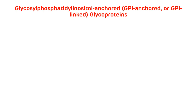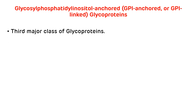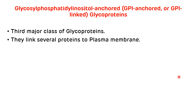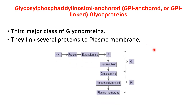Glycosyl phosphatidylinositol anchored glycoproteins, called GPI-anchored glycoproteins, are the third major class of glycoproteins. They are involved in the attachment of several proteins to the plasma membrane. The picture shows the structure of GPI-anchored glycoproteins, which contain glucosamine as well as phosphatidylinositol — that is why they are called GPI-anchored glycoproteins.